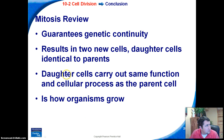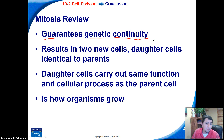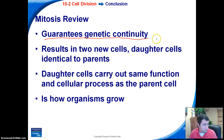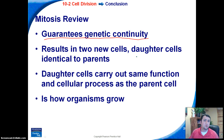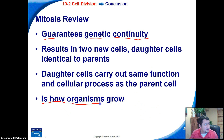Let's review. Mitosis is one of the most important concepts in all of biology. The reason we do mitosis is to guarantee genetic continuity — to make sure that every cell we get from a parent cell has that same DNA inside. This results in two new cells that are identical to the parent cell, like making a clone — two identical daughter cells. Each daughter cell can do the same function as the parent cell. One of the most important reasons we do mitosis is so that organisms can actually grow up and become adults. That was the focus on cell division. My name is Mr. Herbst, and I'm signing off.